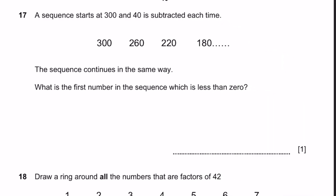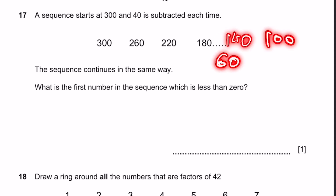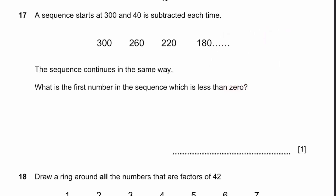Question 17. A sequence starts at 340, subtracting each time. The sequence continues the same way — what's the first number less than 0? The sequence goes to 140, 100, 60, 20, and then negative 20. Negative 20 is less than 0, so that's the answer.